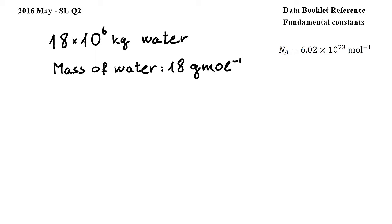In this question, we have to calculate the number of water molecules in a swimming pool. We are given that there are 18 times 10 to the power of 6 kilograms of water in the pool, and that the mass of water is 18 grams per mole.